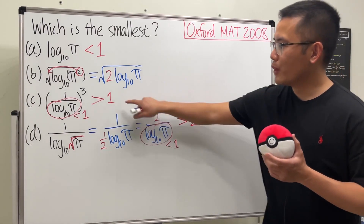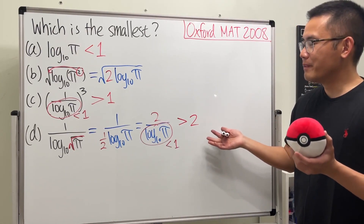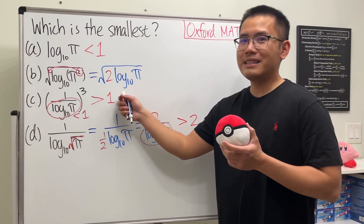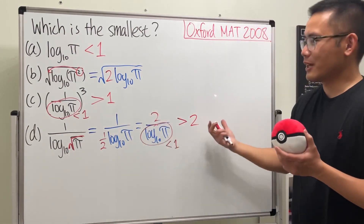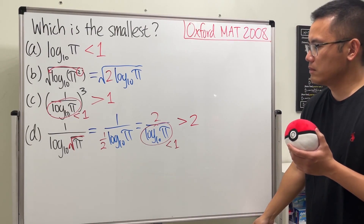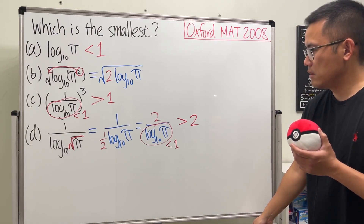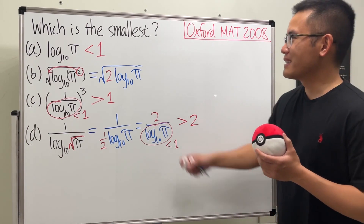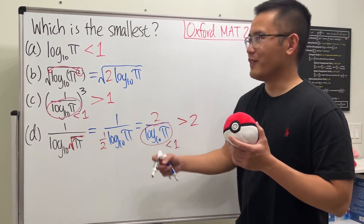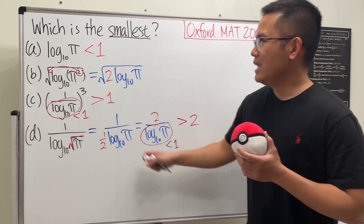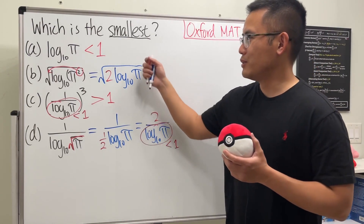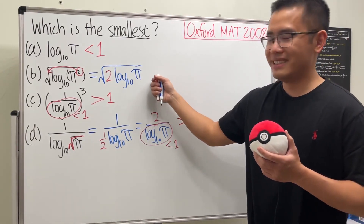I don't know which of these is bigger — you guys can let me know. Maybe that's another question: which one is actually bigger? That's a pretty good question. But thankfully we just need to find the smallest, so it's going to be between A and B. Now 50-50 — what do you guys think? How many choose A, how many choose B?